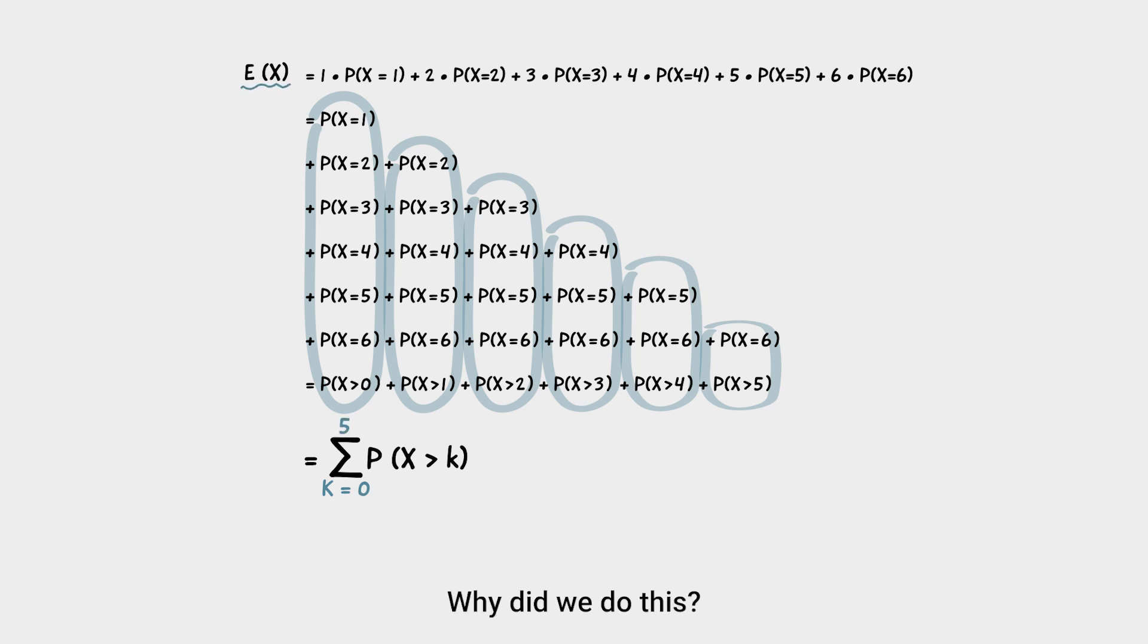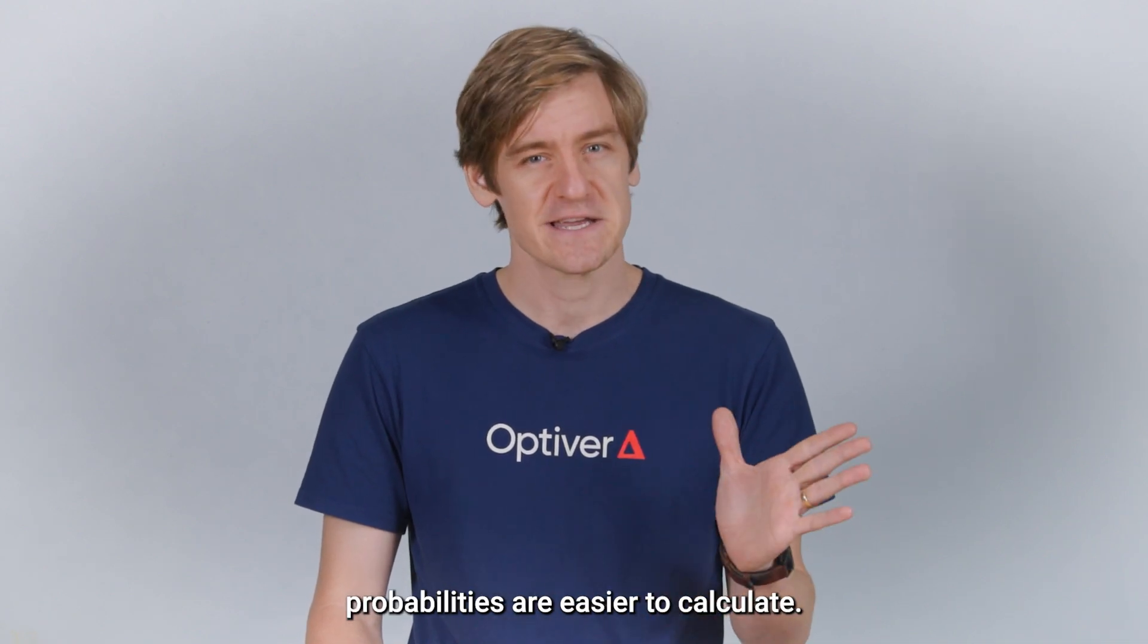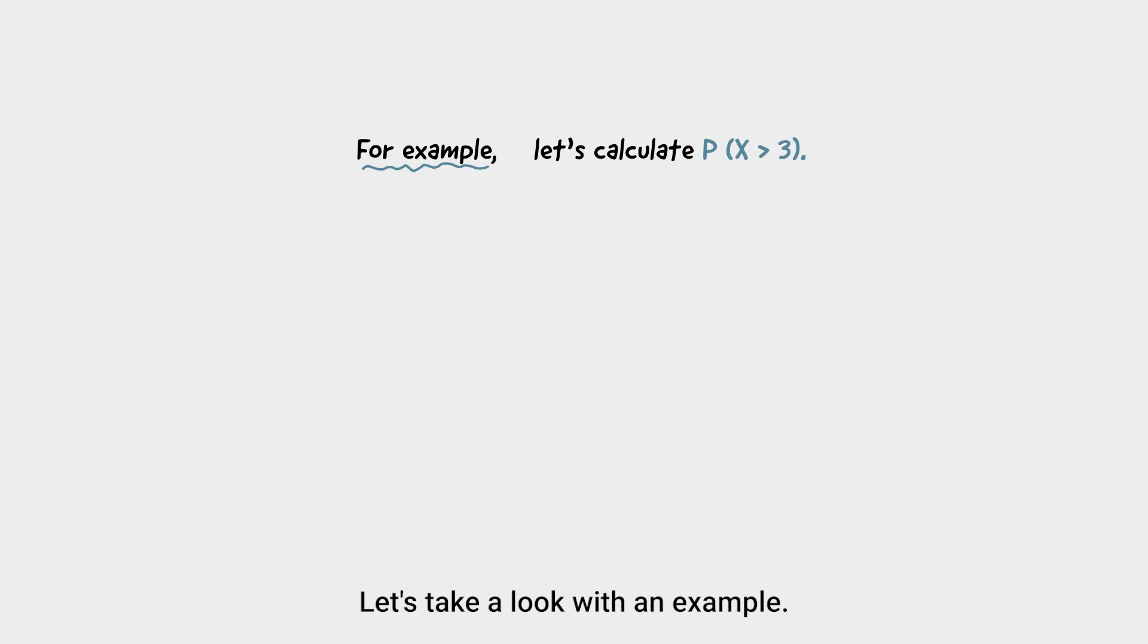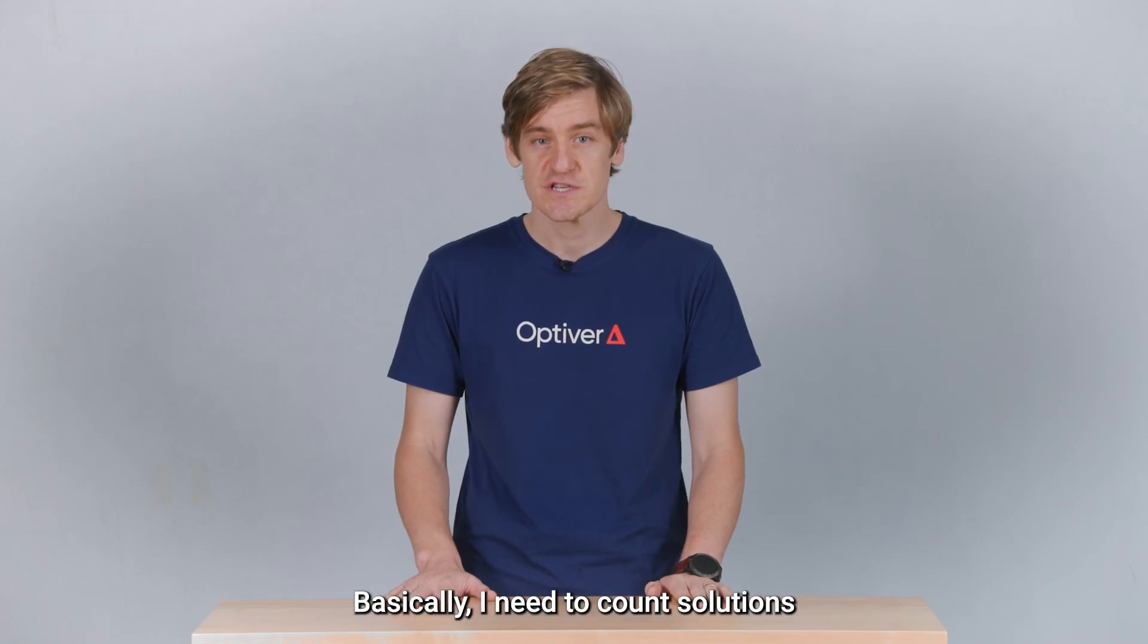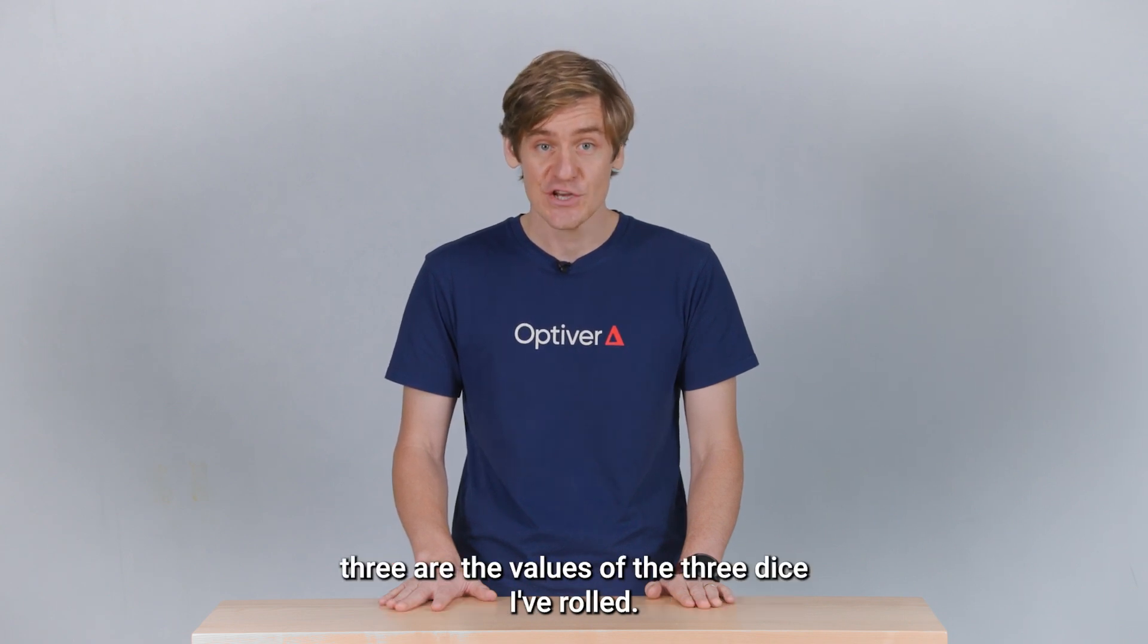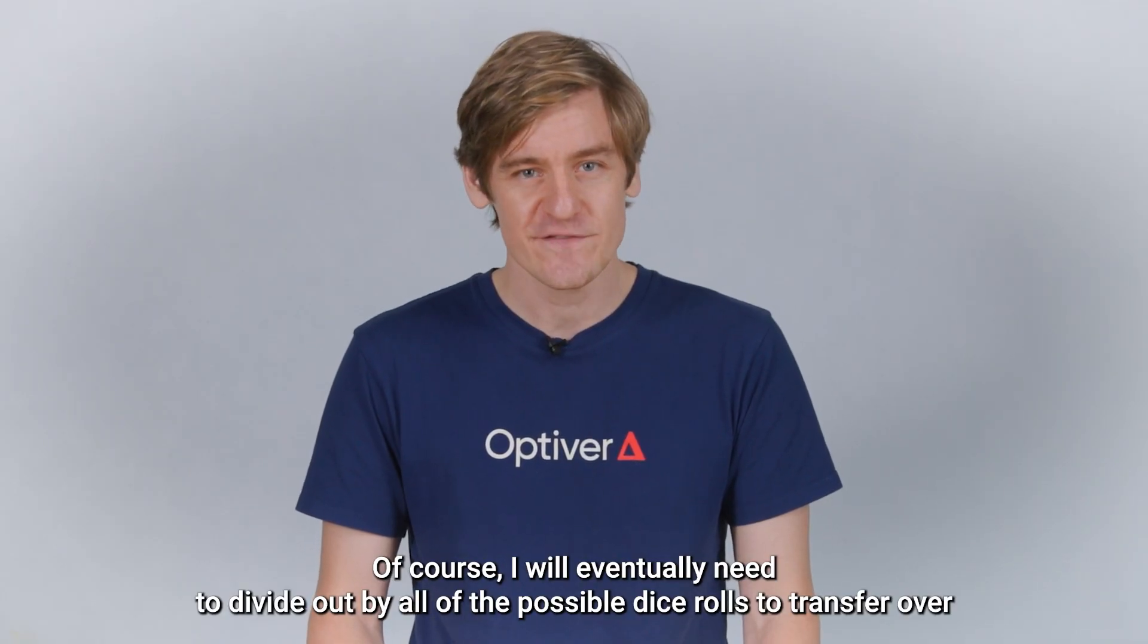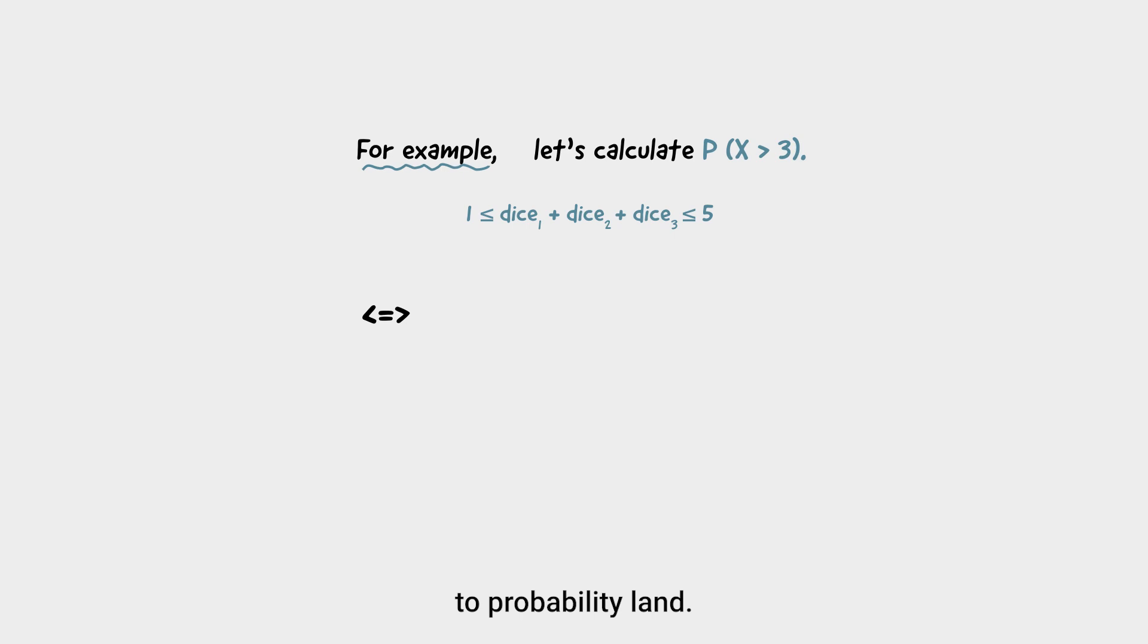Why did we do this? Well, it turns out in this case that these cumulative probabilities are easier to calculate. Let's take a look with an example. Say we want to calculate the probability that x is greater than three. Then we just need to count all of the ways we can roll three dice and still not have gotten to six yet. For then we know that x is greater than three. Basically, I need to count solutions to this inequality. Where dice one, dice two and dice three are the values of the three dice I've rolled. Of course, I will eventually need to divide out by all of the possible dice rolls to transfer over to probability land.